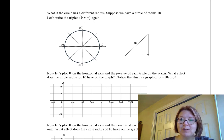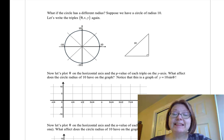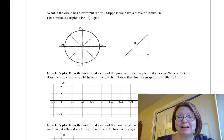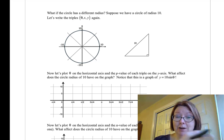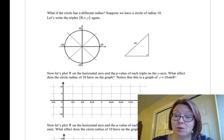So suppose we have a circle of radius 10. Let's write the triples again for angles of 45 degrees or π over 4 increments, but let's first figure out our isosceles right triangle when the radius is 10 instead of 1.